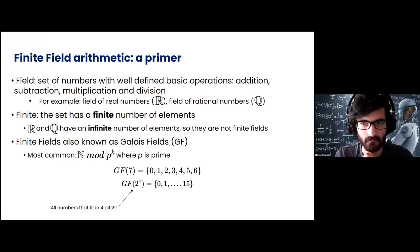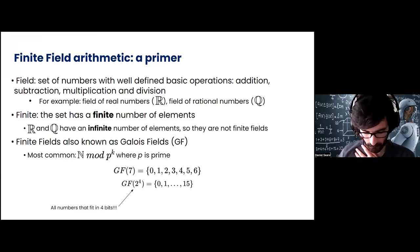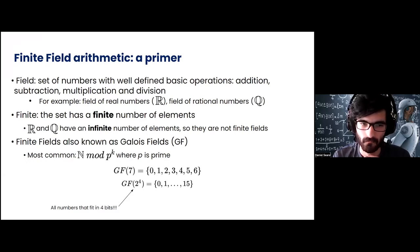So what is Finite Field Arithmetic? A field is a set of numbers with well-defined basic operations: addition, subtraction, multiplication, and division — for example, the field of real numbers. Finite means that the set has a finite number of elements, so the real numbers are not finite fields. In the literature, finite fields are referenced as Galois fields, and they're normally a field over the natural numbers modulo p to the k, where p is a prime. We really care about Galois fields where p is 2, because that gives us a really easy way of showing all the numbers that fit into k bits. For example, GF(2^4) gives us a way of showing all the numbers that fit in 4 bits.